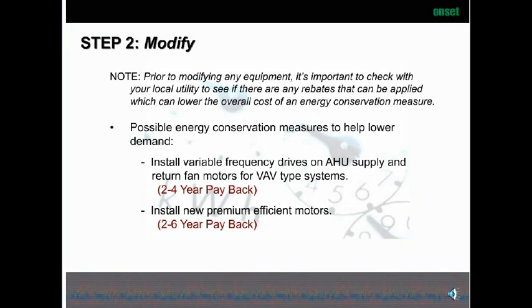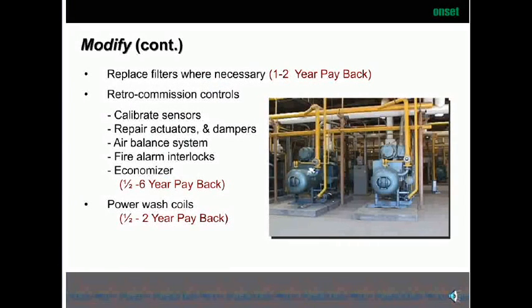One modification that's very simple and should always be done is installing new premium efficient motors. It's amazing how many older motors are still out there. If your motors have been rewound, they're at least 1 to 5 percent less efficient than the nameplate rating, so always factor that into your efficiency calculations. Replacing filters where necessary typically shows a one- to two-year payback and is very easy to do. Even in hospitals where filters are costly, the delta P or pressure drop across those filters can cost a lot of energy, making filter replacement a low-cost modification.